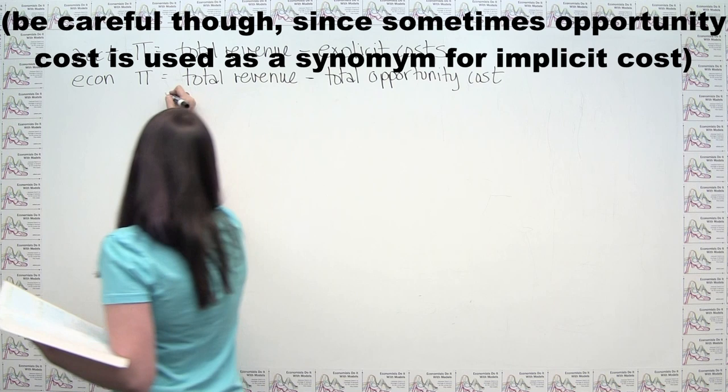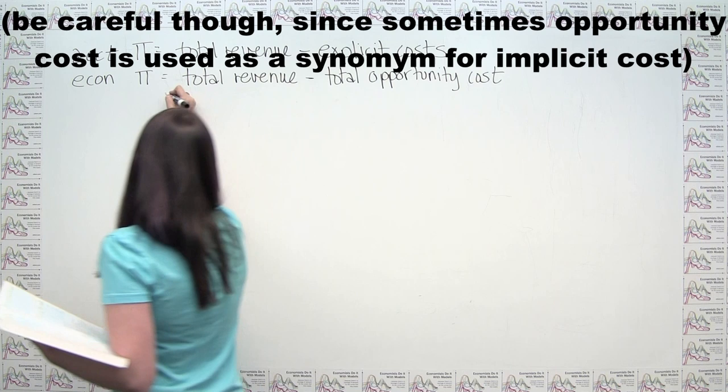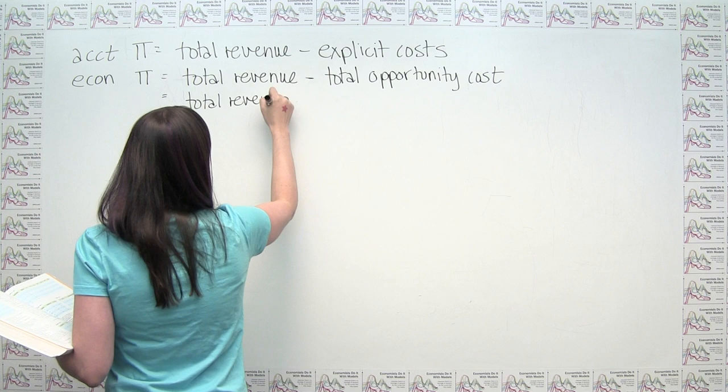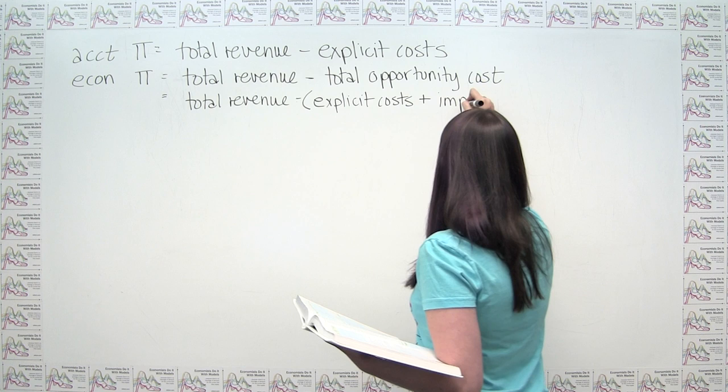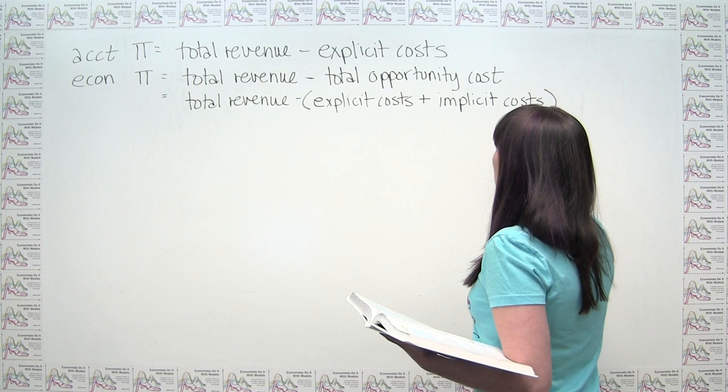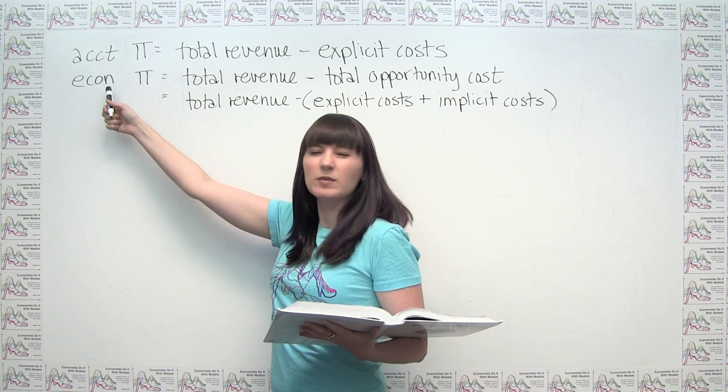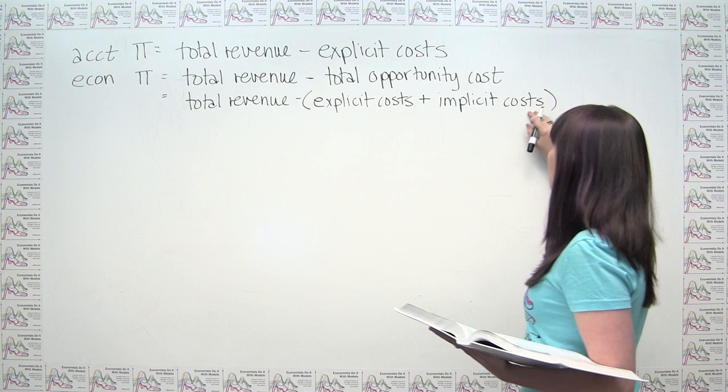So economic profit is just total revenue minus the sum of explicit cost and implicit cost. The distinction between accounting profit and economic profit is that economic profit also counts implicit costs as a cost in the formula.